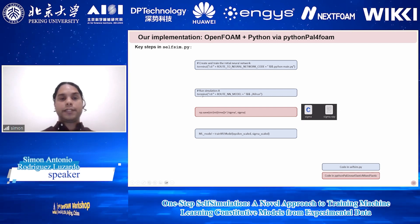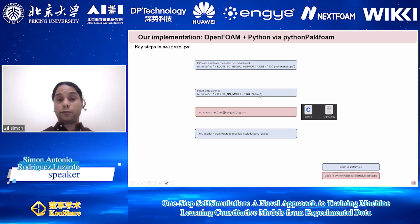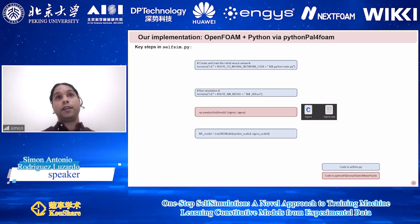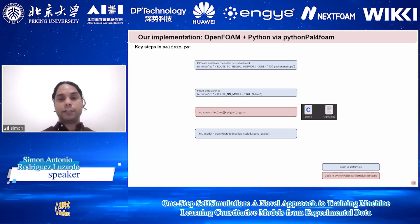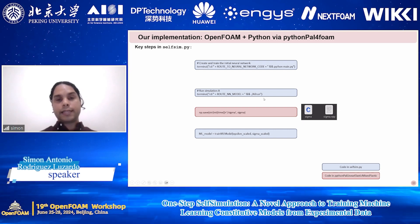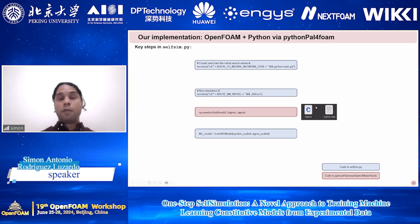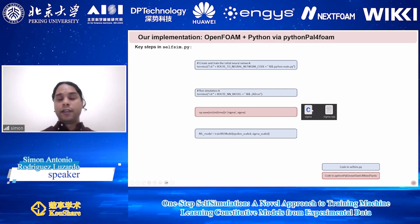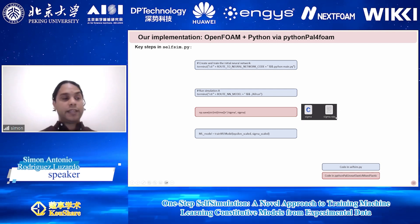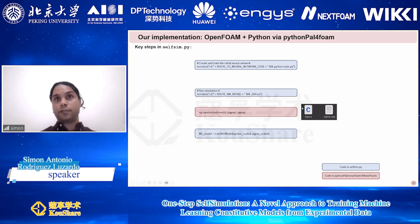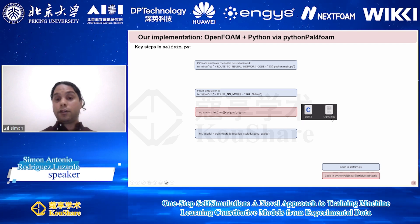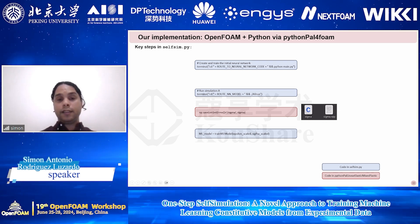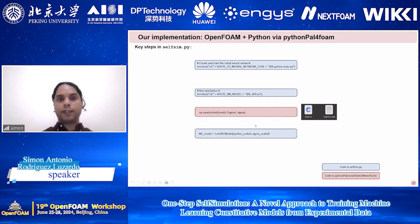Later in the code, we again use the terminal function to run the OpenFOAM simulation where the measured loads are applied as boundary conditions. Once the simulation is completed, we need the stress field in Python, since our machine learning models are implemented there. We use PythonPal to save the stress field from the simulation in a format readable from Python — specifically, the sigma field is saved in a sigma.npy file. Then, using this file together with the strain field epsilon, we retrain the machine learning model.